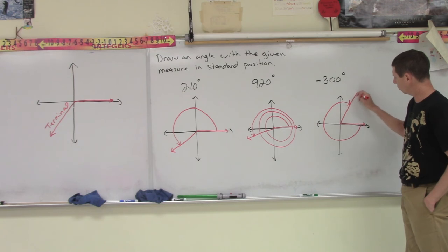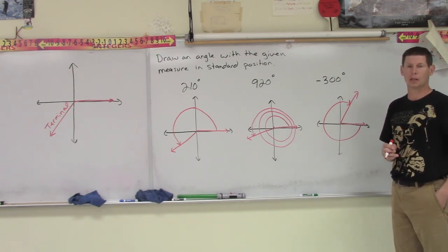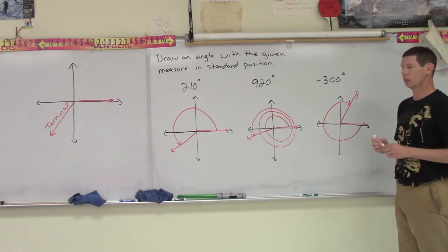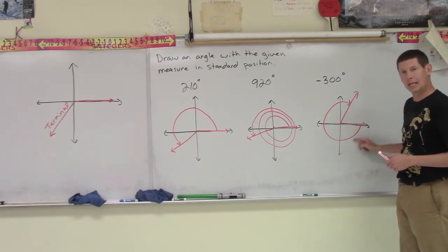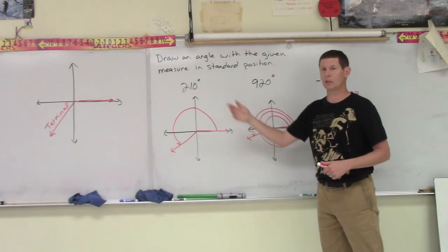So then we'll tack in our terminal side. So again, the important things are we put an arrow indicating which way we're spinning in the negative direction or the positive direction.